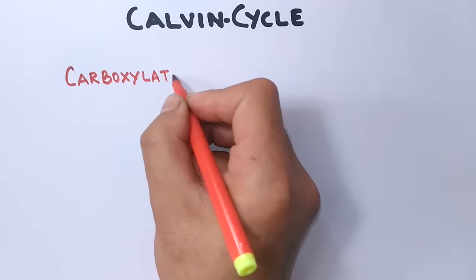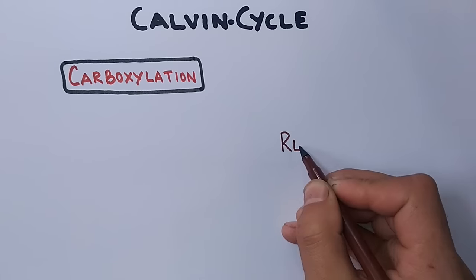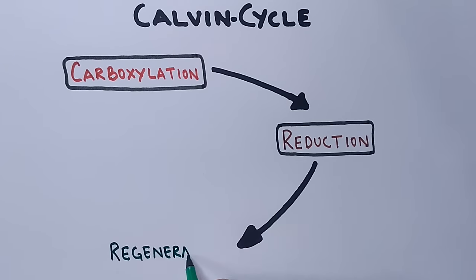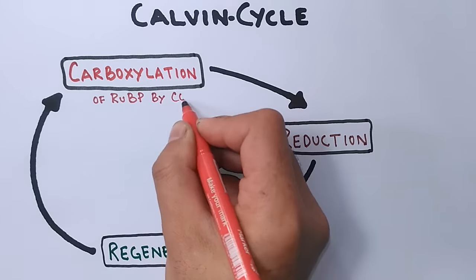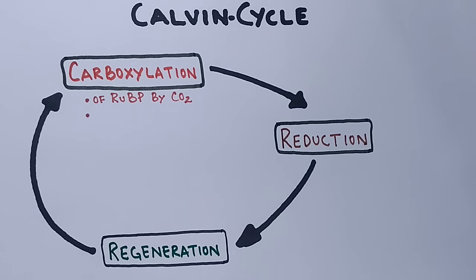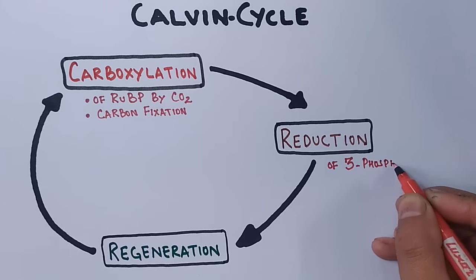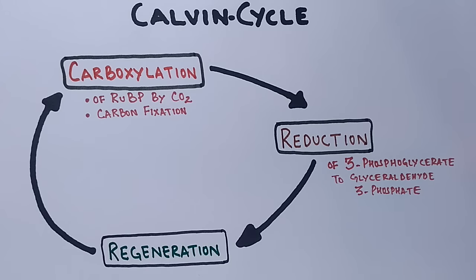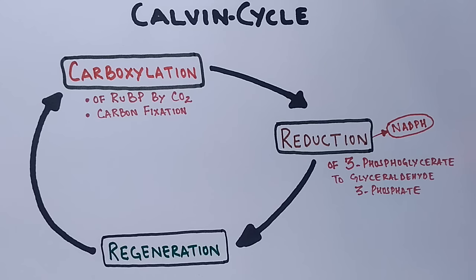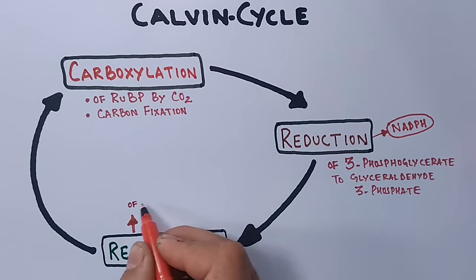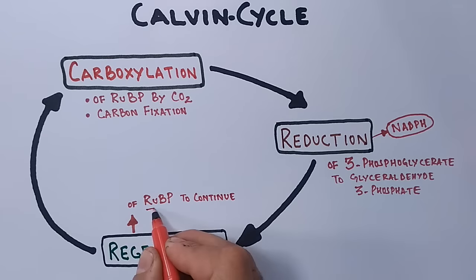The Calvin cycle is divided into three phases. The first is the carboxylation phase, followed by the reduction phase, and finally the regeneration phase. In the carboxylation phase, carboxylation of RuBP occurs by carbon dioxide — carbon fixation occurs via the RuBP molecule. Then there is a reduction of 3-phosphoglycerate to glyceraldehyde-3-phosphate, done by the reducing agent NADPH. Finally, in the regeneration phase, RuBP — ribulose bisphosphate — is regenerated to continue the cycle.